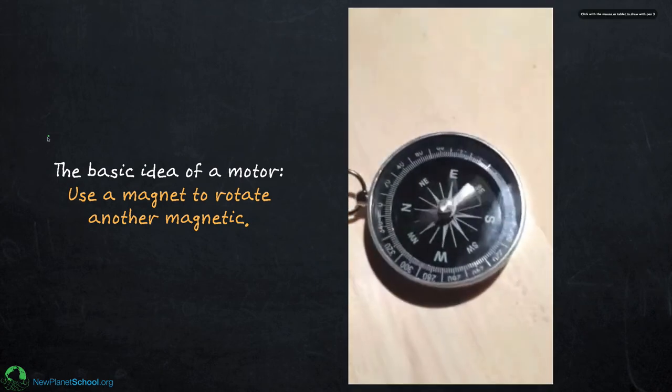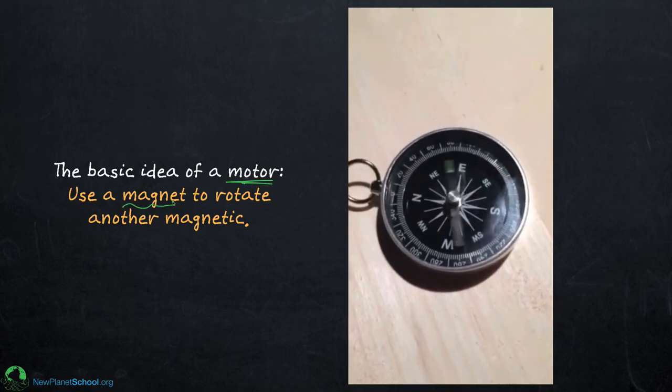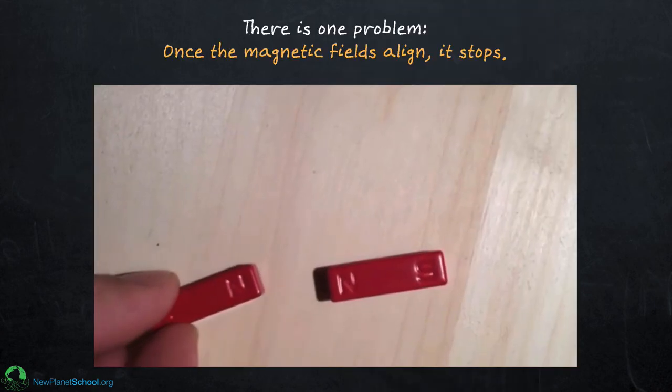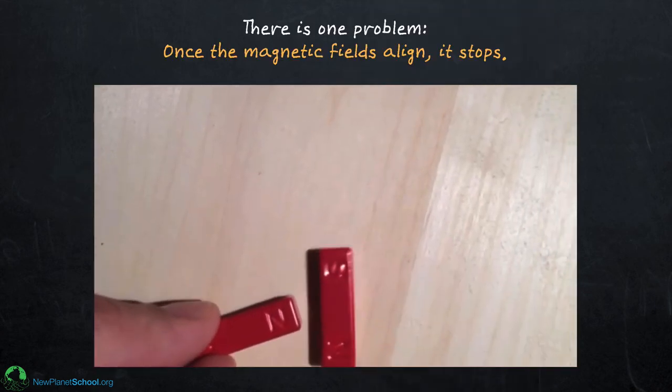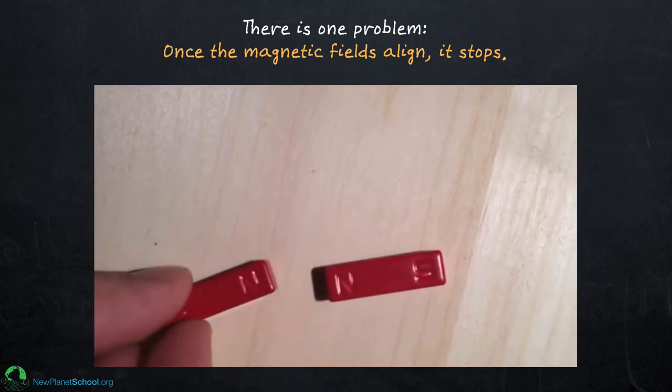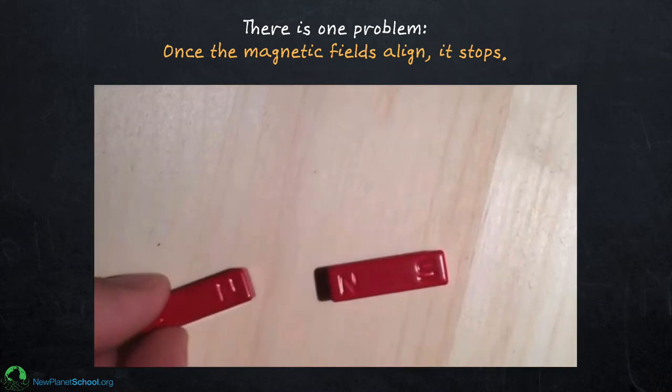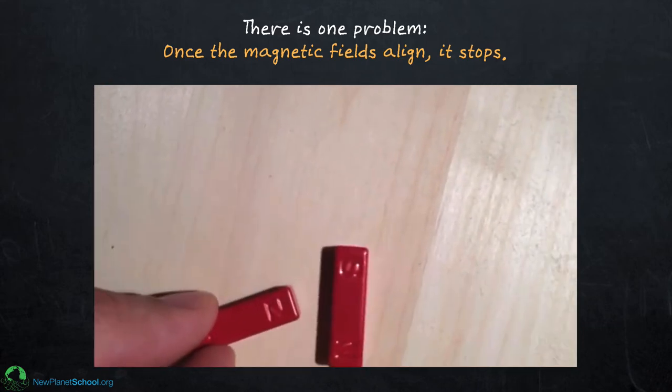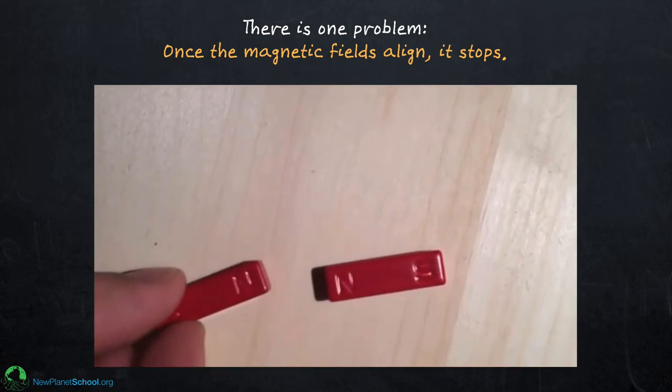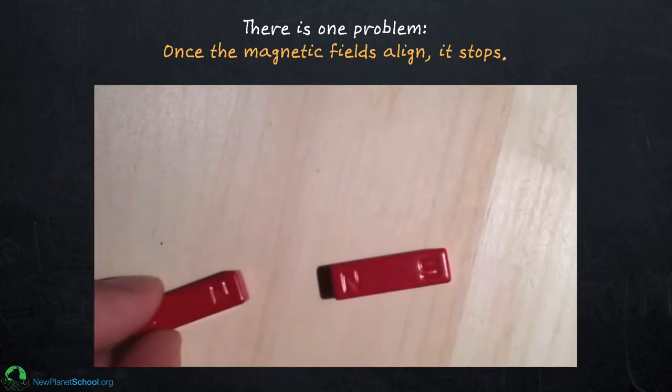In fact, you can take that magnet and make the compass needle spin. And you think about that, that's what the basic idea of a motor is. We want to use a magnet to rotate another magnet. If I take a magnet next to another magnet, I can make it spin. The magnet on the right is spinning and it aligns itself. The problem is, once it's rotated all the way around, it stops. This is the problem that we have to figure out. If we could make it spin like that and keep going, we would have a motor.